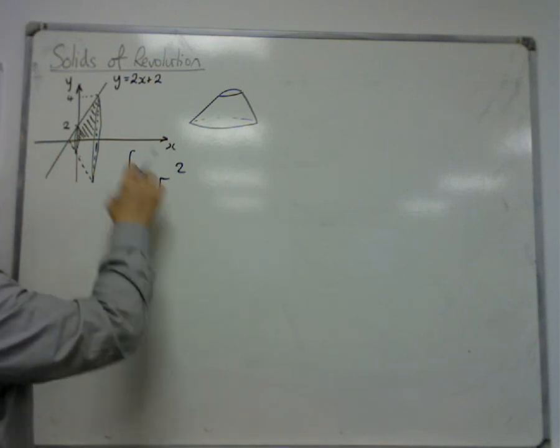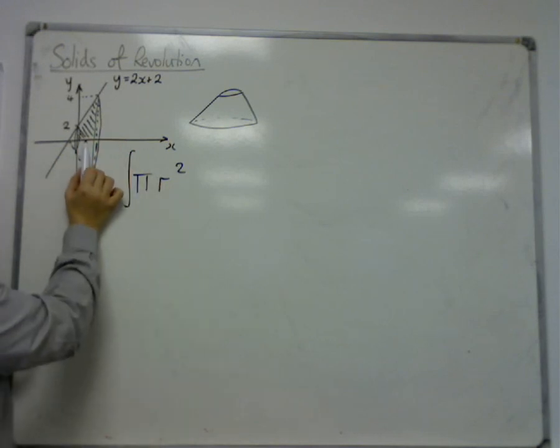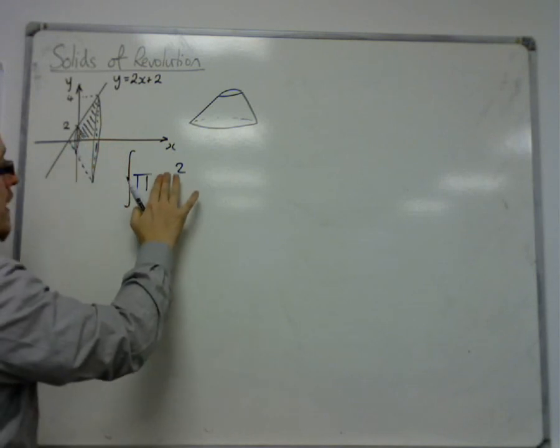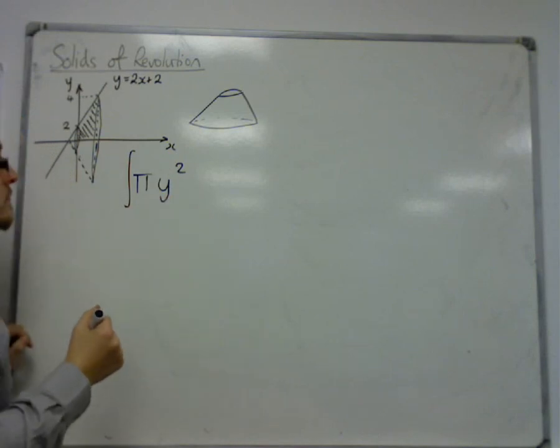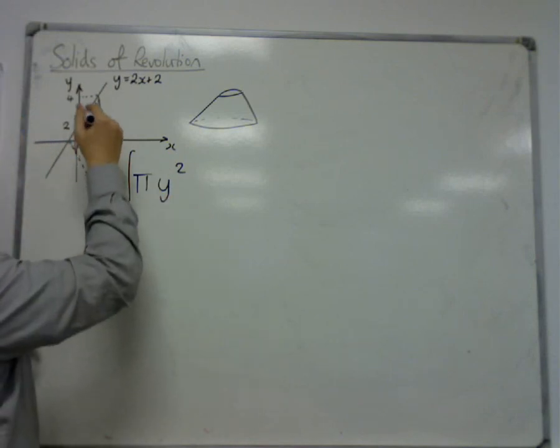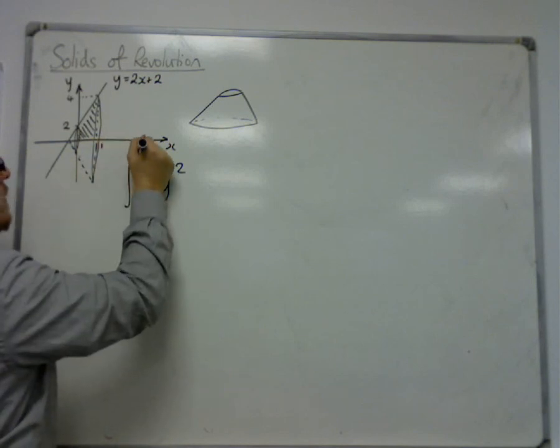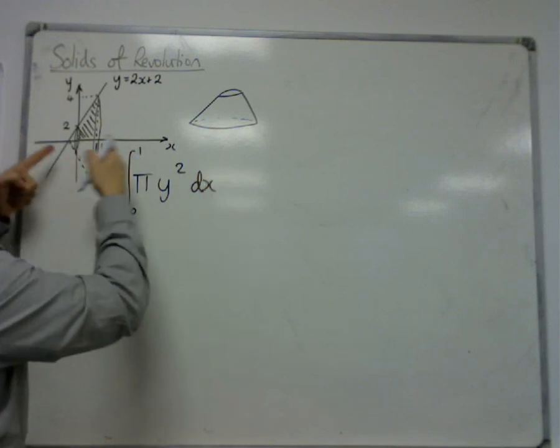But because r, the radius is changing, what we've said is that for each value of x, the radius is given by y equals. So the radius is actually y equals at each point between, in this case, 0 and 1. And we're integrating over dx.